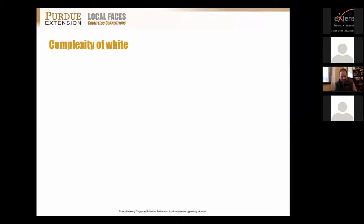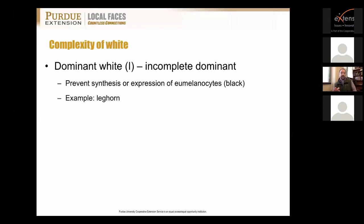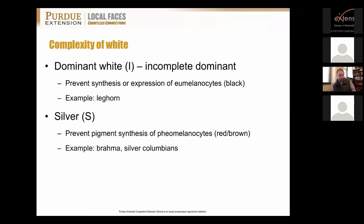White seems simple but it isn't. There are multiple genes dealing with white. The first is dominant white, an incomplete dominant that prevents the synthesis of any black pigment — an example being the white leghorn. Without dominant white, you would have a black layer. The silver gene prevents red and brown coloring; birds carrying it include brahmas and silver Columbians. Crossing two white birds — a white leghorn and a brahma — may not give you the white result you expect, as they are two very independent genes.